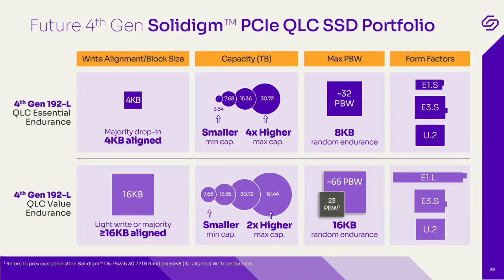Form-factor-wise, we have three form factors for each product. For Essential Endurance: E1.S, E3.S, and U.2. IU-aligned means for Essential Endurance it's 4K writes, which most SSDs use. For Value Endurance it's 16K IU — you have to write in 16K-aligned writes to achieve the best performance. You can always write in smaller blocks, but endurance and performance will be impacted. The petabyte write rating changes based on whether you're properly aligned.